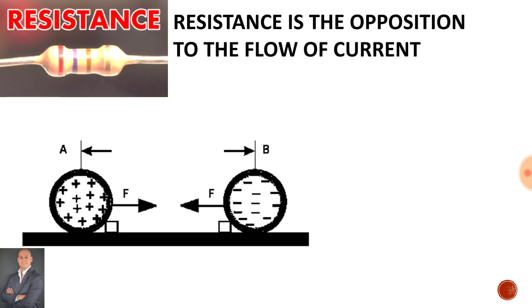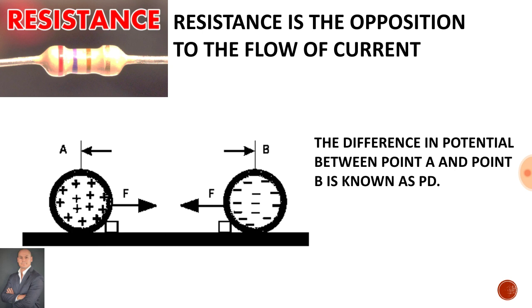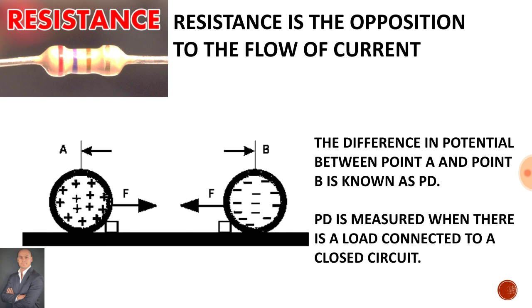Resistance is the opposition to the flow of current. The difference in potential between point A and point B is known as potential difference. Potential difference is measured when there is a load connected to a closed circuit.